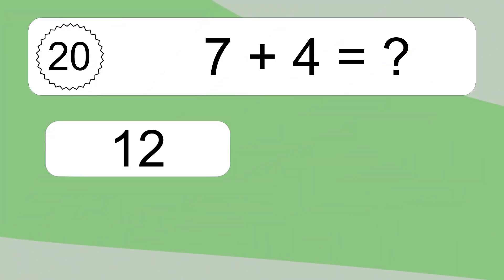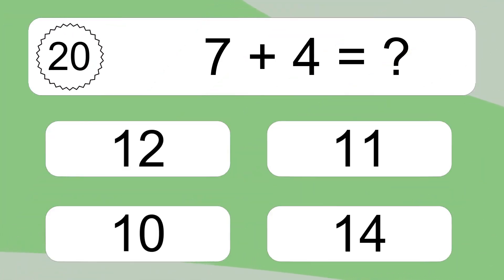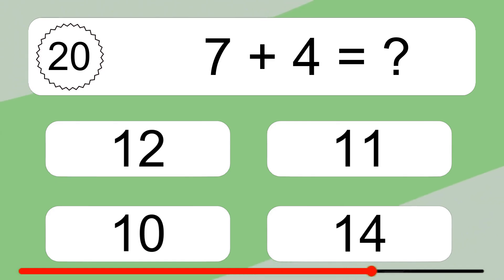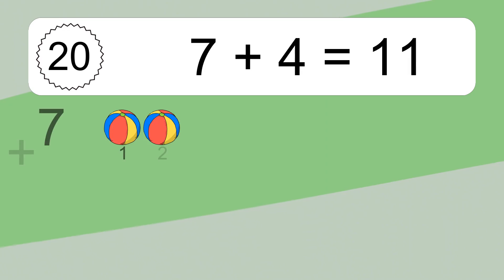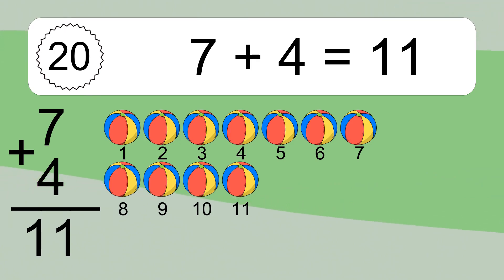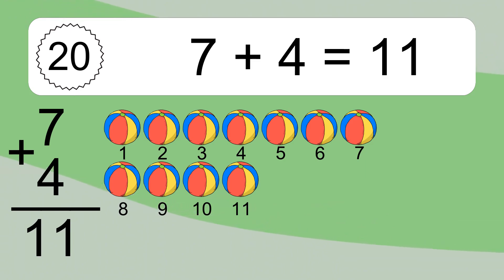7 plus 4 equals what? 7 plus 4 equals 11. Let's count it: 1, 2, 3, 4, 5, 6, 7, 8, 9, 10, 11.